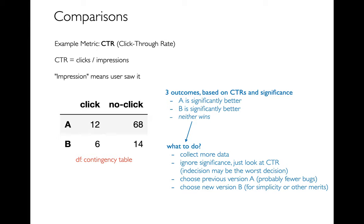In some cases, like the Python version upgrade, we actually expect neither wins — we expect switching from Python 3.7 to 3.8 won't affect anything. So choosing to move to the new version B makes a lot of sense in that situation.